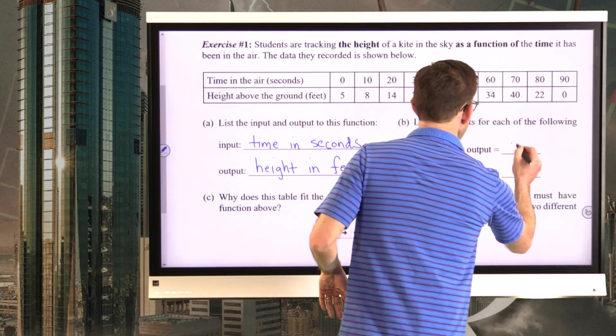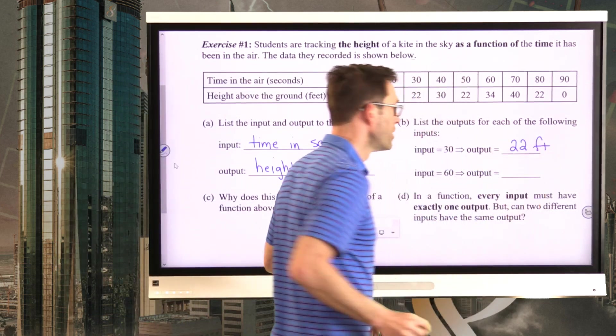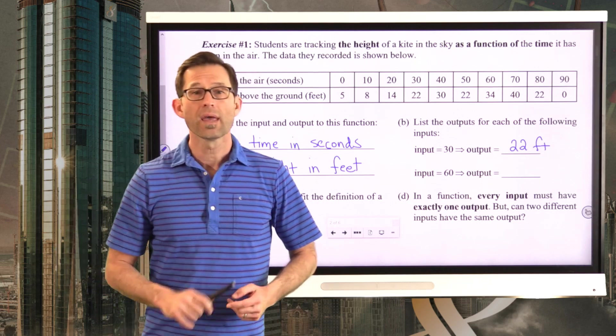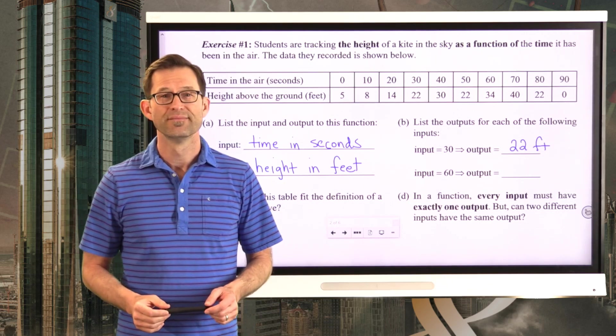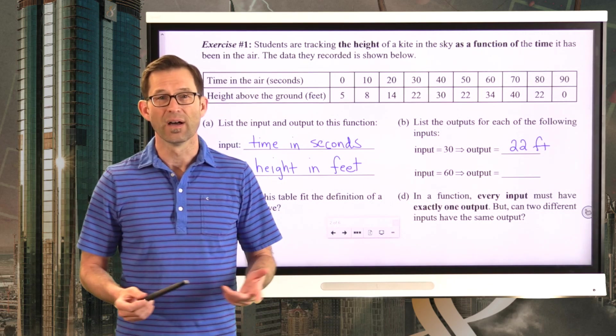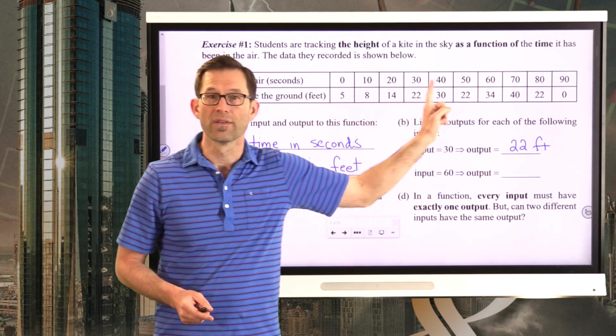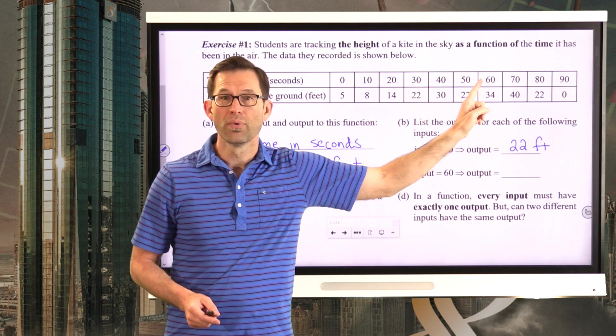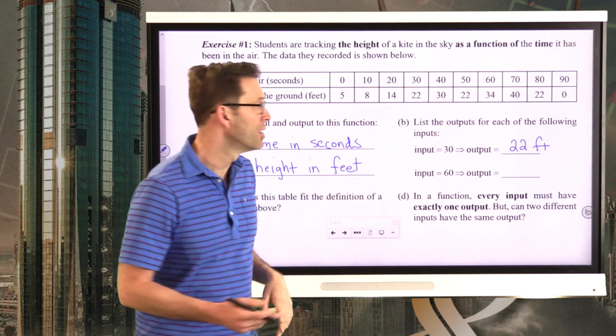So the output is 22 feet. What's the output when the input is 60? Well, that's easy enough. I go along here in the table. My input of 60 gives me an output of 34.